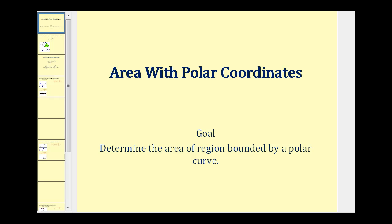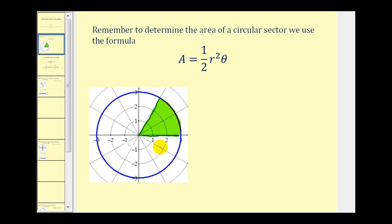Before we take a look at this from a calculus perspective, I'd like to take a look at the area of a circular sector, which you should be familiar with from trigonometry. So if we want to find the area of this circular sector here in green, we can use the formula area equals one half r squared theta, where r is the radius of the circular sector, and theta would be the angle in radians.